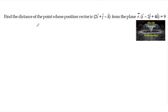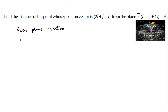Find the distance of the point whose position vector is 2i plus j minus k from the plane r dot of i minus 2j plus 4k is equal to 9. So the given plane equation in vector form is r dot of i minus 2j plus 4k equals 9.